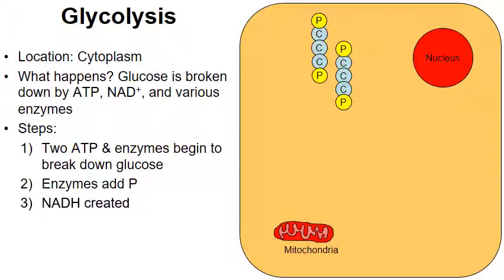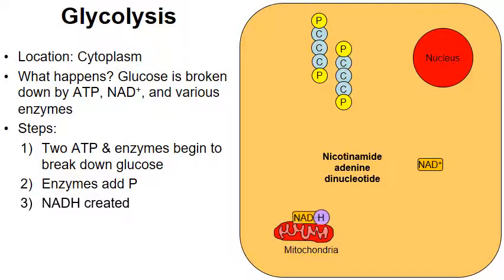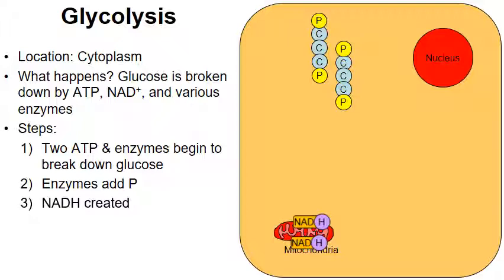Next, a couple molecules of NADH will be created. NADH starts out as a molecule called NAD, which stands for nicotinamide adenine dinucleotide. What happens is — with enzymes involved — NADH will strip off a hydrogen and generally carry that hydrogen over to the mitochondria. This happens on both sides: the other NADH will also strip off a hydrogen and carry it to the mitochondria. Now that we're near the end of glycolysis, let's focus on those four yellow phosphate groups.